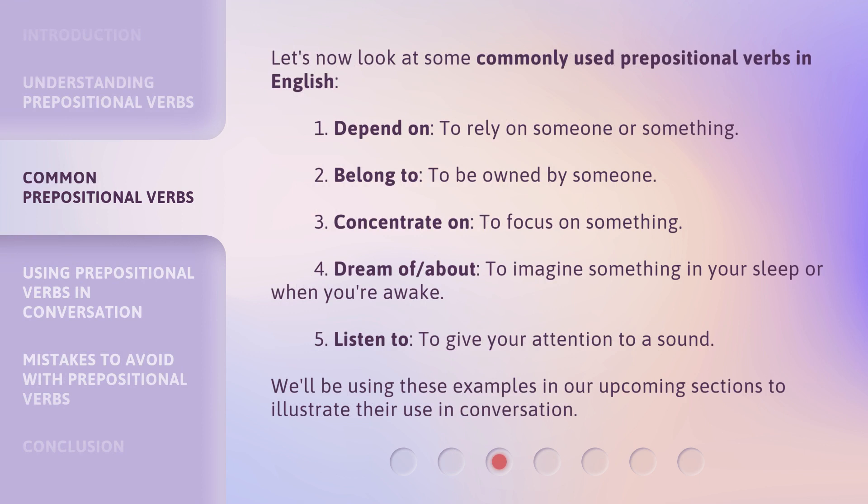Let's now look at some commonly used prepositional verbs in English. 1. Depend on — to rely on someone or something. 2. Belong to — to be owned by someone. 3. Concentrate on — to focus on something. 4. Dream of or about — to imagine something in your sleep or when you're awake. 5. Listen to — to give your attention to a sound. We'll be using these examples in our upcoming sections to illustrate their use in conversation.